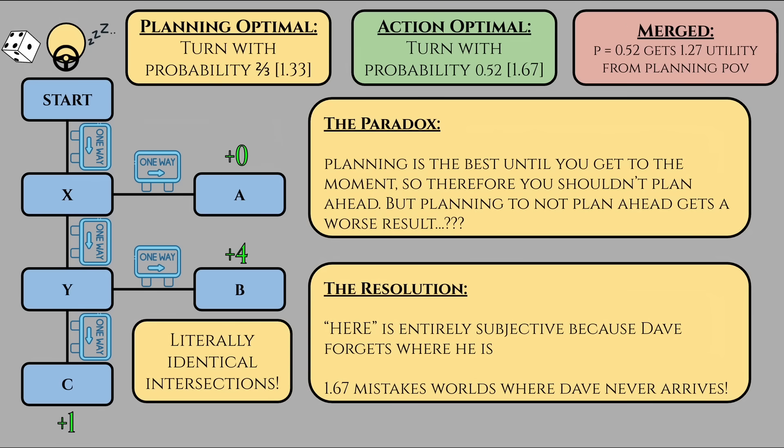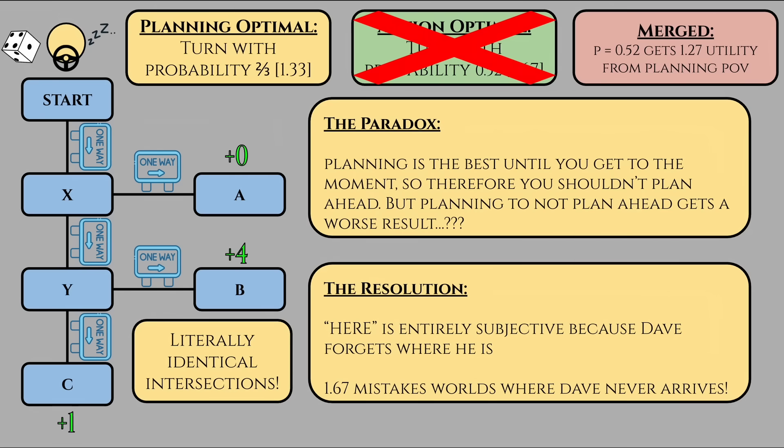Thus, the maths for 1.67 actually overcounts and leaves out the worlds where Dave would have exited earlier, where then he would currently not be at an intersection.